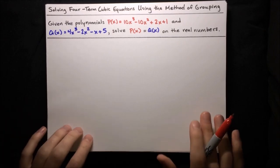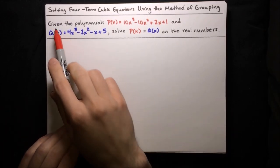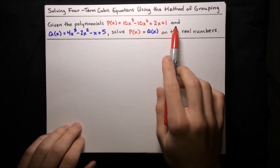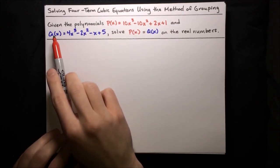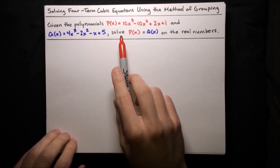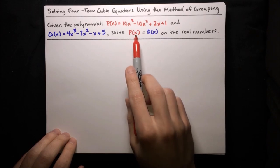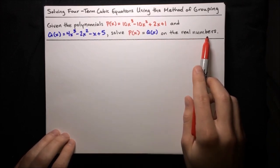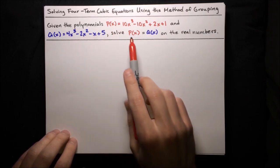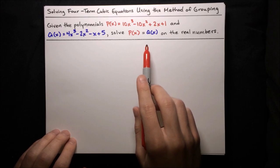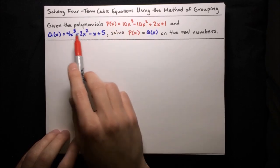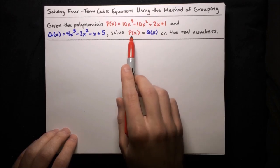Here's another example. This time we're given two polynomials: P, which is 10x cubed minus 10x squared plus 2x plus 1, and also Q, which is 4x cubed minus 2x squared minus x plus 5. We want to solve P of x equals Q of x on real numbers — that is, find real values of x for which these two polynomials are equal. We'll start by writing P of x and Q of x in terms of x according to their definitions, and then get an equation in x.